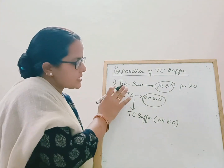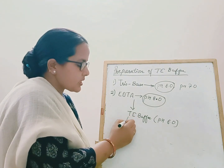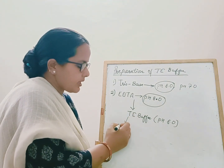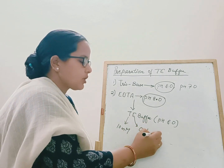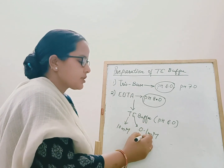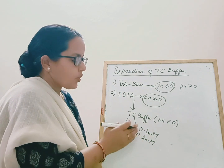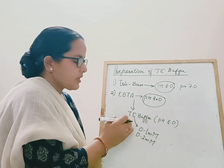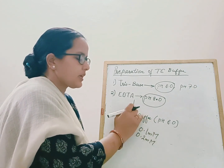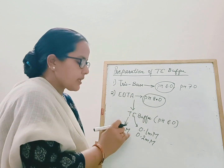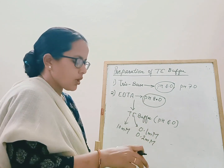Regarding concentration: Tris is used at 10 millimolar, and EDTA is either 0.1 millimolar or 0.2 millimolar. You can prepare TE buffer as either 10 mM Tris / 0.1 mM EDTA or 10 mM Tris / 0.2 mM EDTA, depending on your requirement. Both formulations are used in the molecular laboratory.